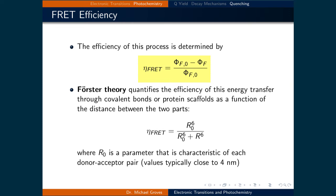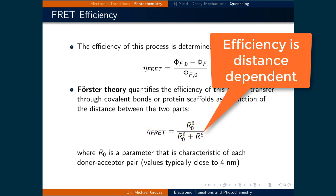The efficiency of this process, denoted as η_FRET, equals (Φf° − Φf) / Φf°. Förster's theory quantifies the efficiency of this energy transfer through covalent bonds or protein scaffolds as a function of distance between the two parts: η_FRET = R₀⁶ / (R₀⁶ + r⁶), where r is the distance between the two parts and R₀ is a parameter characteristic of each donor-acceptor pair, with values typically around 4 nanometers. As the distance r increases, the denominator gets larger and the efficiency decreases. As a result, we can use FRET as a molecular ruler, since we can resolve different efficiencies for different distances.